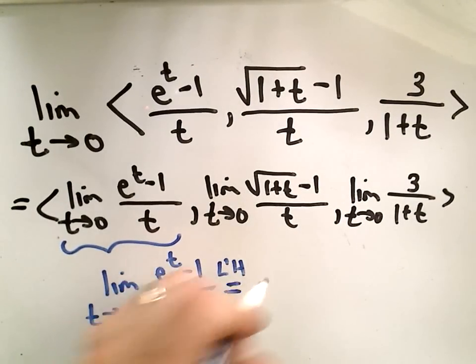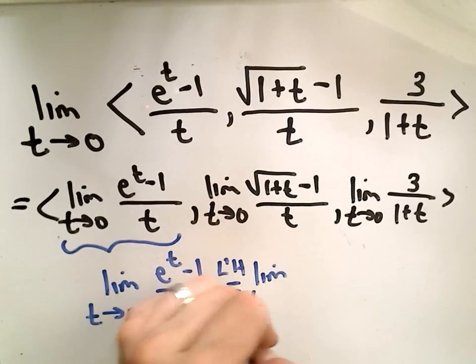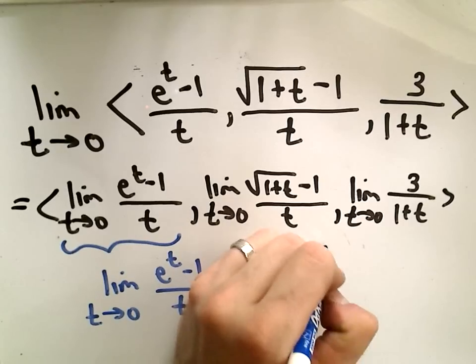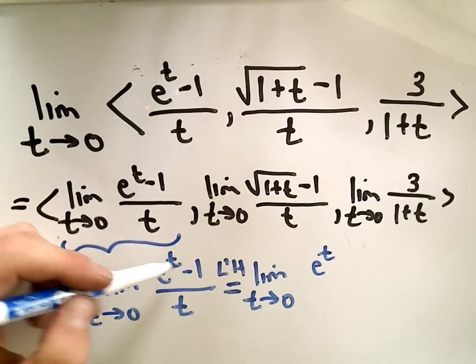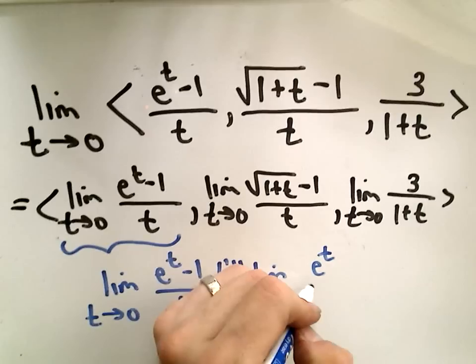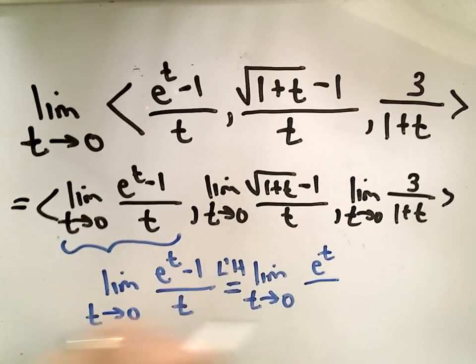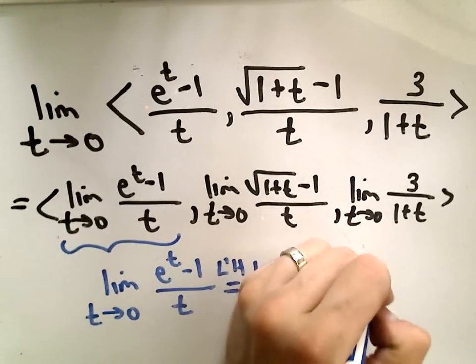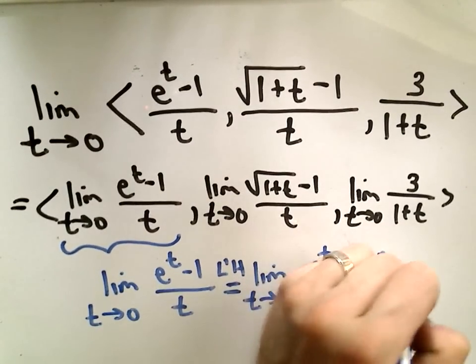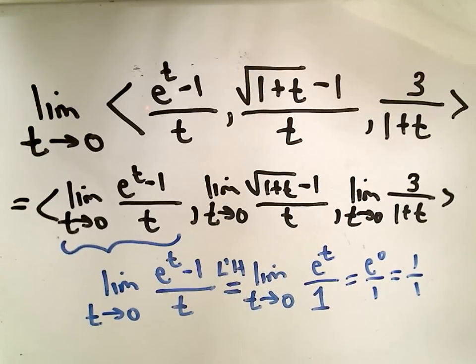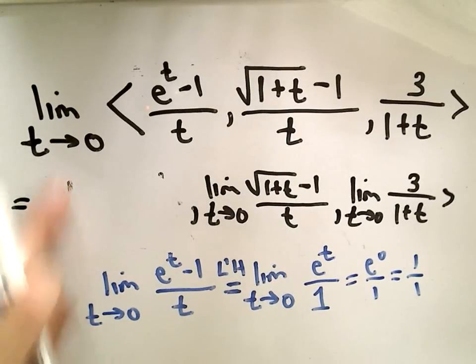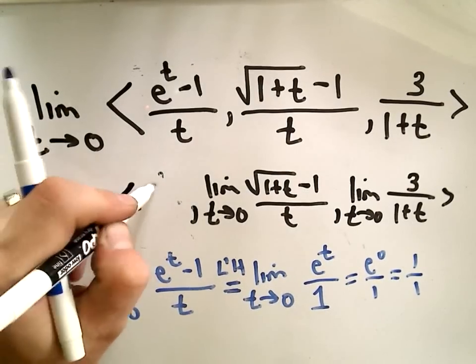So if we use L'Hopital's rule, we'll get the limit as t approaches 0. Well, the derivative of the numerator would just still be, the derivative of e to the t would be e to the t, but minus 1 would go away. The derivative of the denominator would just be 1. And now I can plug in t equals 0. I'll get e to the 0 over 1, which is 1 over 1, or simply 1. So the first limit is simply going to work out to be equal to the value of 1.